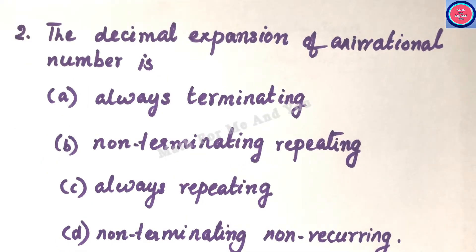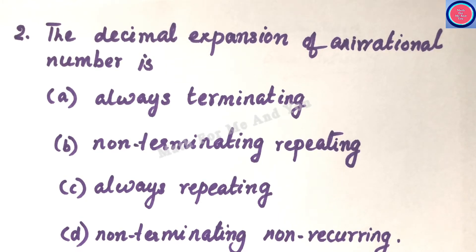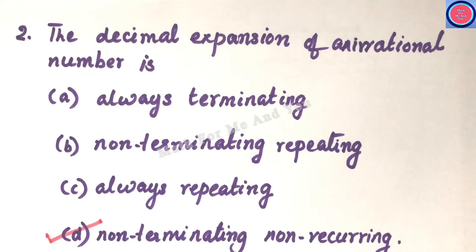Q2: The decimal expansion of an irrational number is — option A: always terminating; option B: non-terminating repeating; option C: always repeating; option D: non-terminating non-recurring. Option D is the correct answer, since irrational numbers have non-terminating non-recurring decimal expansions.